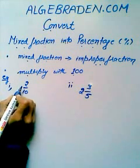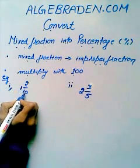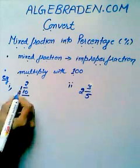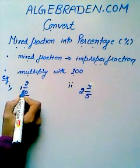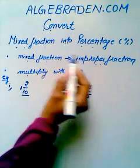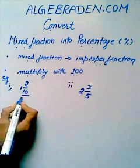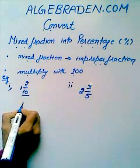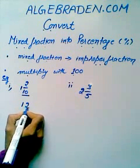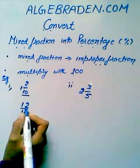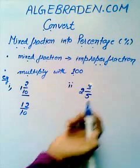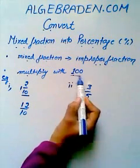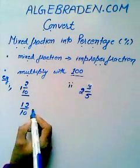For example, we have 1 and 2/10. It is a mixed fraction. So first convert this mixed fraction into an improper fraction. It gives us 12/10. It is an improper fraction. Now multiply the improper fraction with 100.